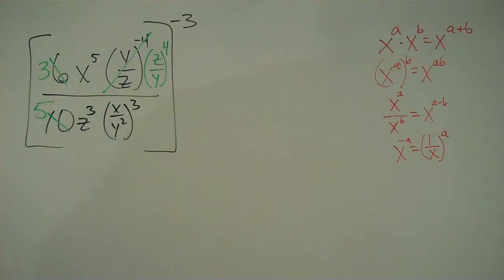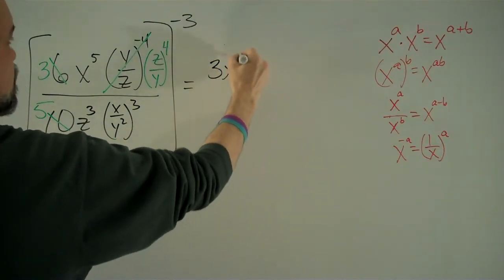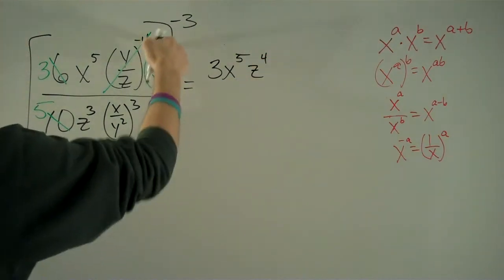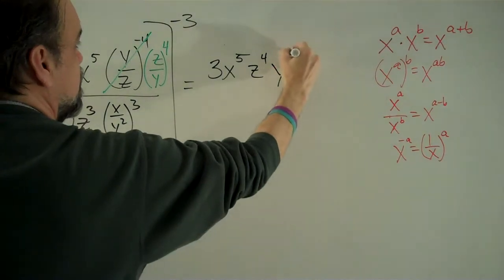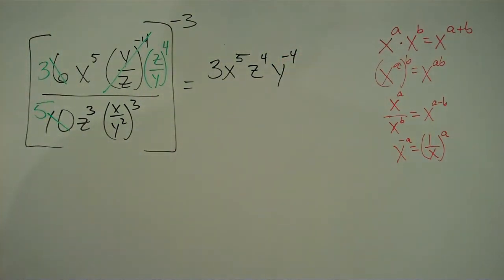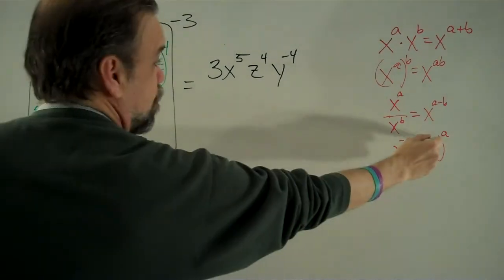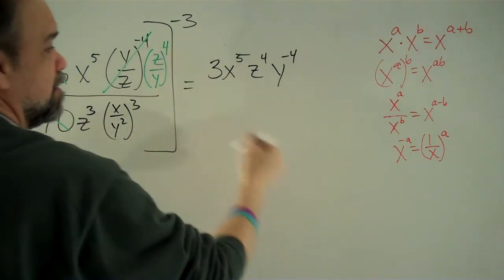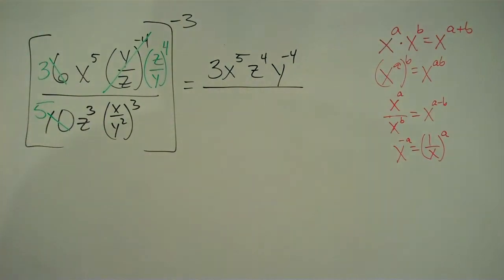And I think that's going to help us a little bit. So let's rewrite this and let's call this 3x to the fifth. And I've got z to the fourth power there divided by y to the fourth. And so I'm going to call that times y to the negative fourth. And the reason I'm doing that is basically I had 1 over y to the fourth, which is y to the negative fourth. So you'll see why I do that in a second.